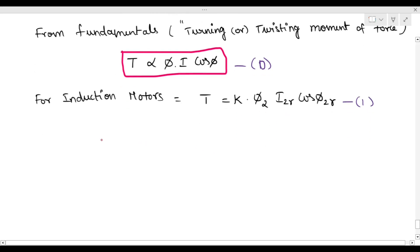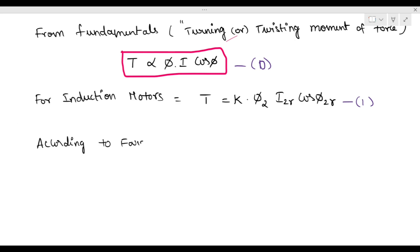First, we derive φ₂. According to Faraday's laws of electromagnetic induction, the EMF is directly proportional to the flux linkage. So flux linkage is directly proportional to the EMF, meaning φ₂ is proportional to the EMF E₂.